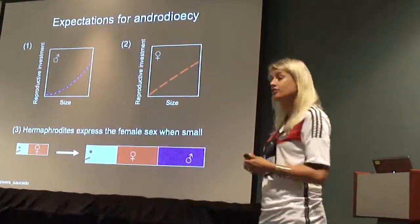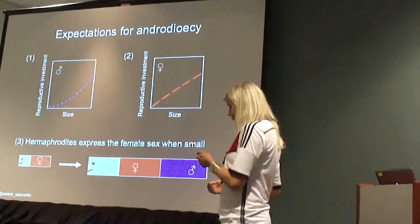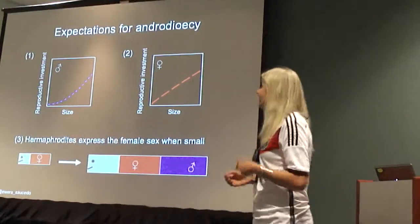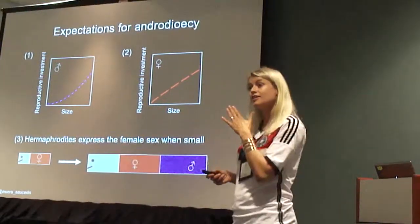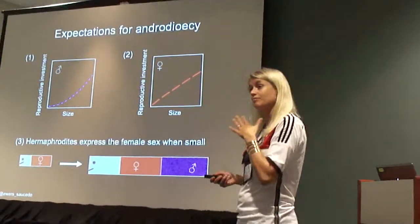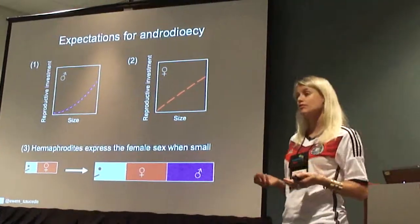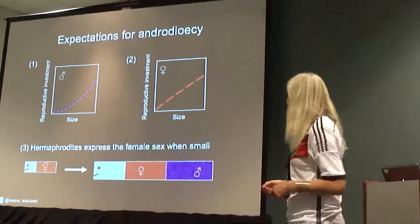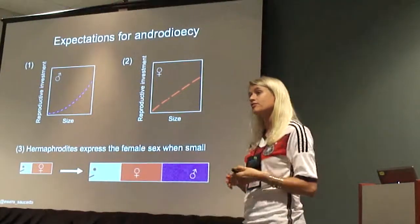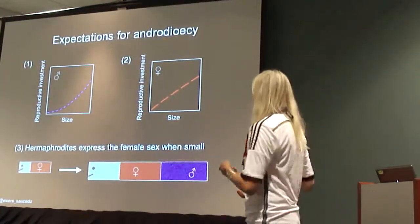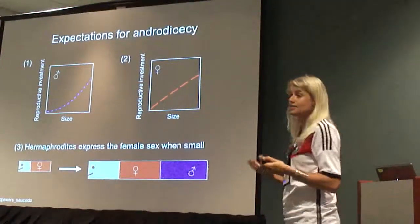From this, we can derive three expectations for androdioecy under sex allocation theory. First, the male size-specific reproductive investment curve should be accelerating, because that was the shape of the fitness gain curve we expect. Second, the female size-specific reproductive investment curve should also be accelerating. And lastly, small hermaphrodites should first express the female function, and later express both functions, because the more saturating fitness gain curve is the female.